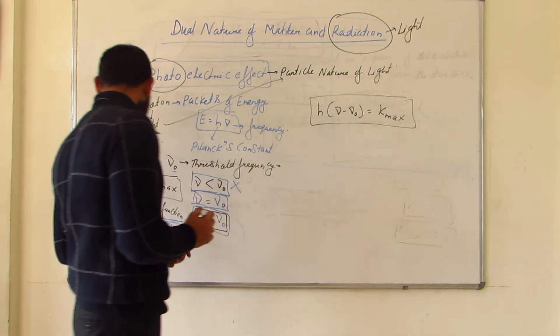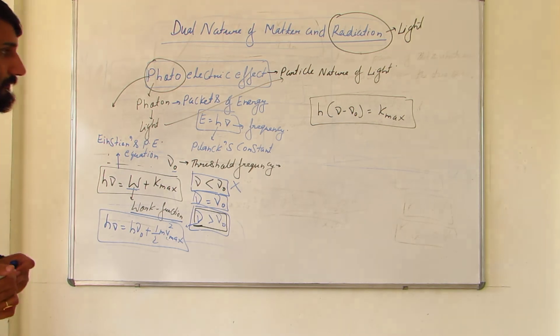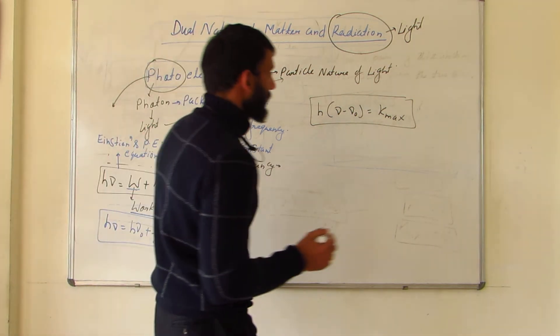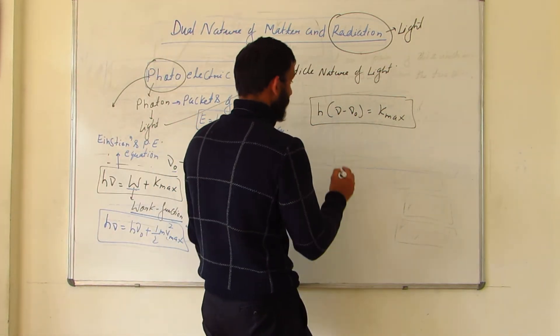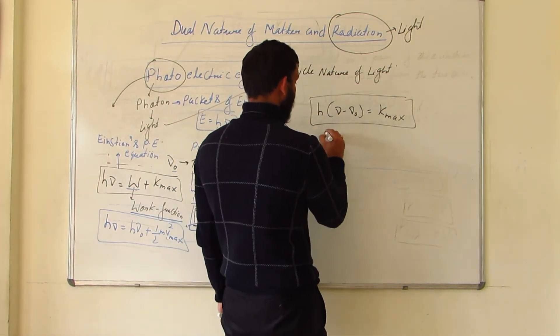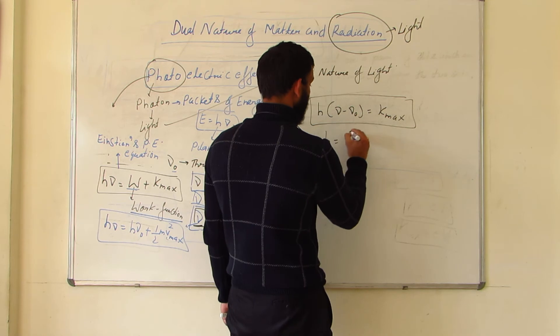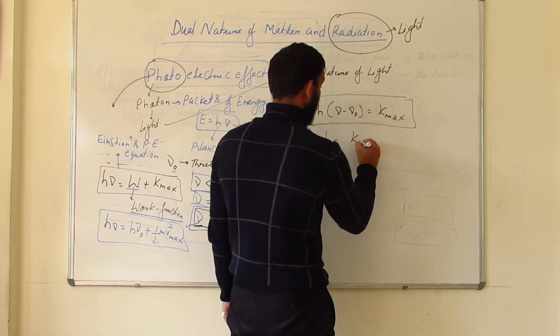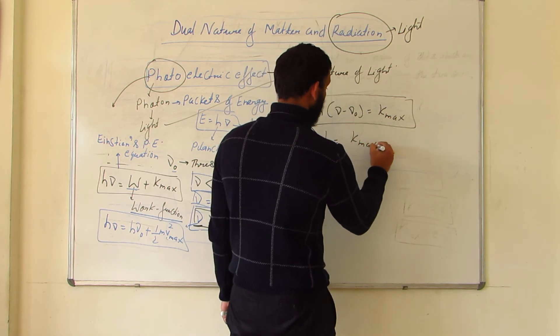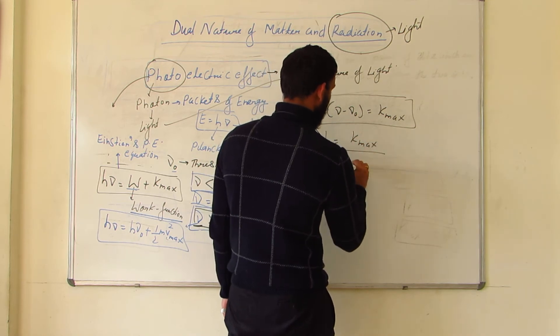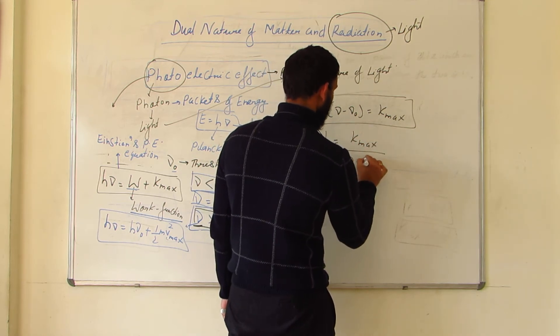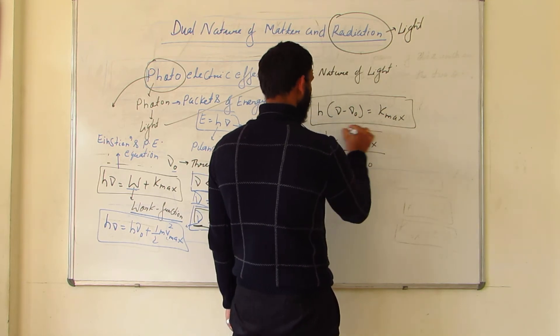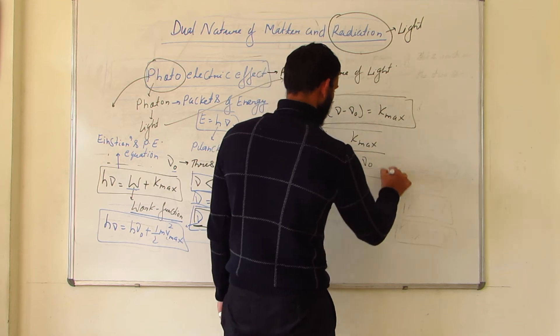Einstein's photoelectric equation can also be written as: hν = hν₀ + ½mv². Rearranging, we get h(ν − ν₀) = K_max. Another useful form is h = K_max / (ν − ν₀), which we will use in the next class.